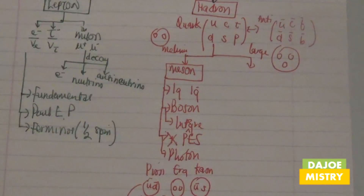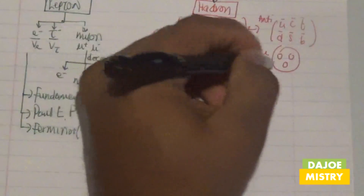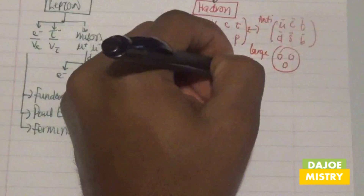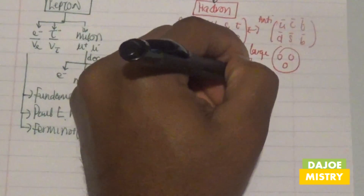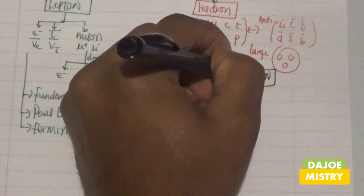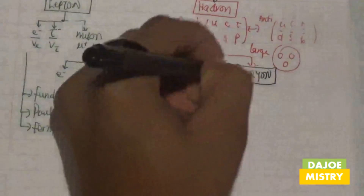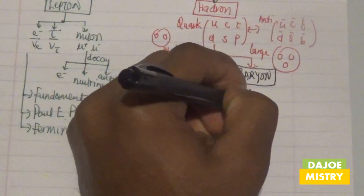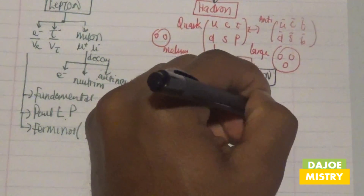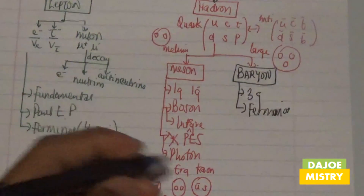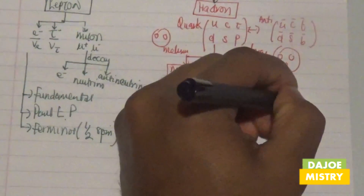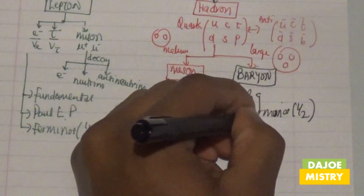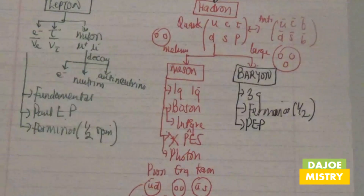Looking at the large part — large particles involve three quarks interacting with each other. These large particles are known as baryons. The three quarks in baryons lead us to believe they obey the fermion rule, which means if you're in a fermion state you have a half-integer spin, and you also obey the Pauli exclusion principle.